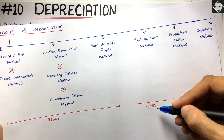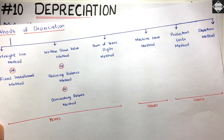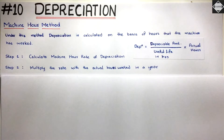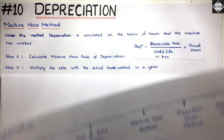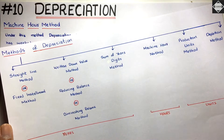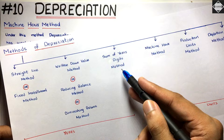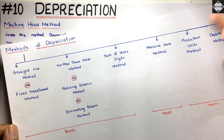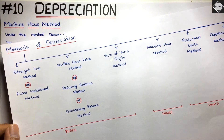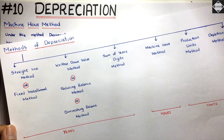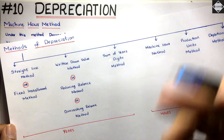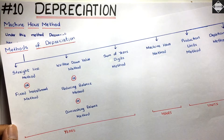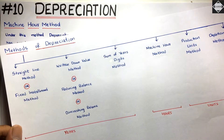The life of the machinery is expressed in form of hours — for how long you can operate them. That's the key here. The accounting treatment is exactly the same as we've seen in SLM, WDV, and Sum of Years Digits. There is no difference at all — the same general entries, ledger accounts, balance sheet and profit and loss treatment. It's just that the way of calculating the depreciation is different.